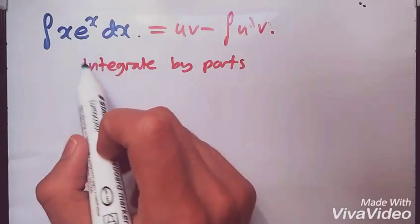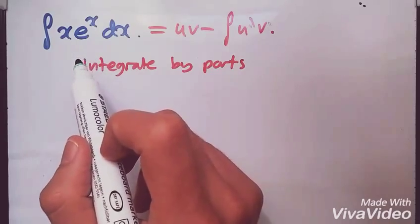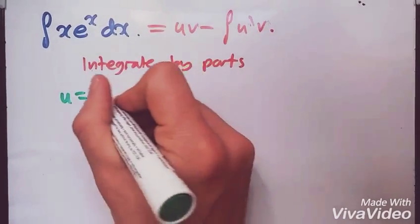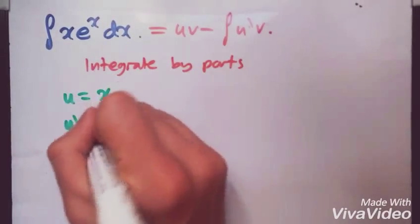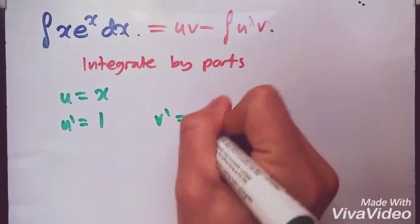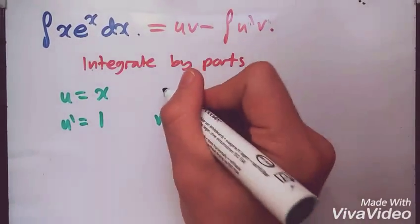So let's select u as x. Taking the first derivative is 1, and v prime is e^x. And of course, the integral of e^x is e^x.